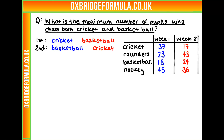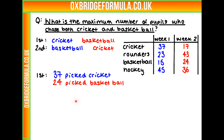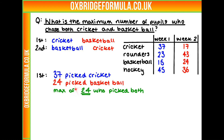Let's look at people in the first group. How many people chose cricket in the first week? There were 37. And basketball in the second week — that was 24. Therefore, there was a maximum of 24 who picked both, as that's the lower number. If everyone who picked basketball in the second week also picked cricket, the maximum could be 24.